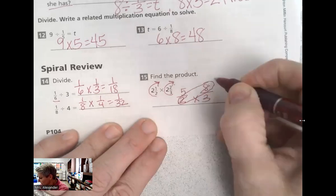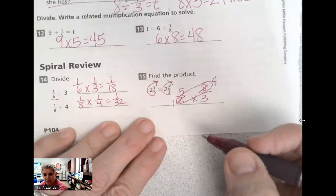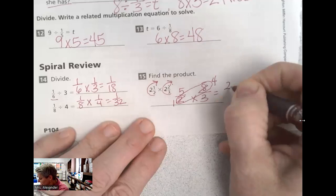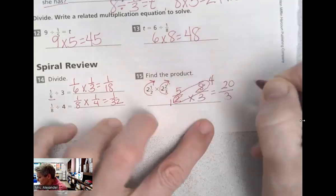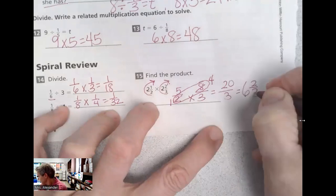I like to simplify first. You don't have to, but you do have to simplify at the end. Both of those two and eight are even numbers. I can divide by two. I would get an answer of 20 thirds, which would then equal six and two thirds. There it is.